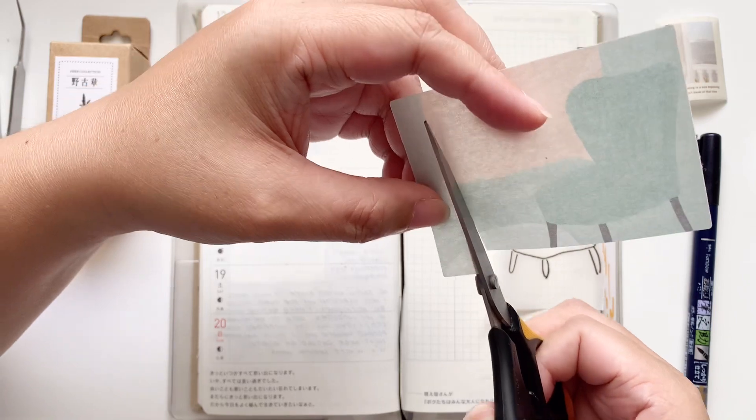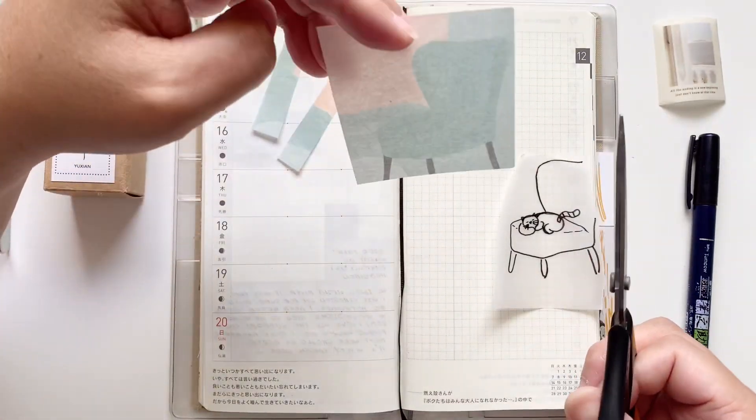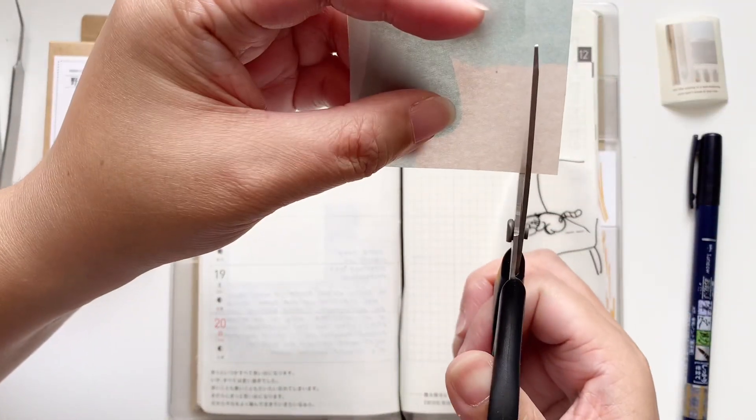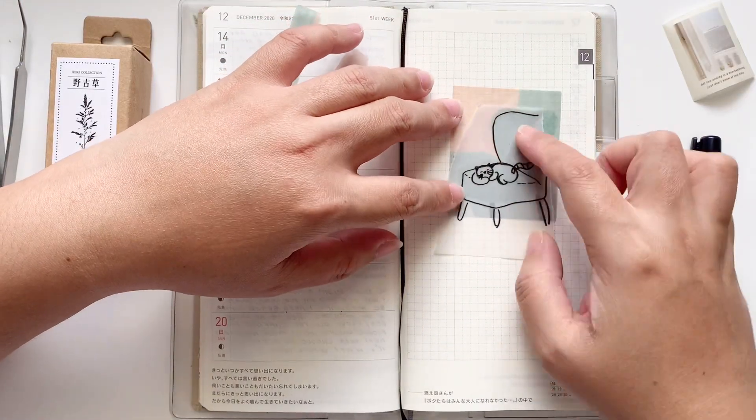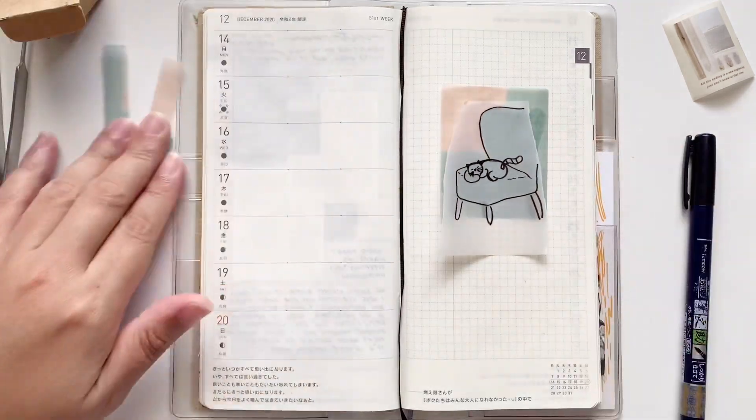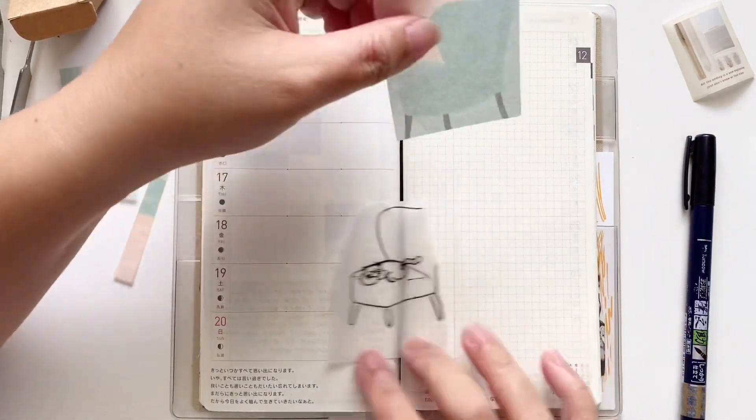I'm cutting up the edge of that really big washi sticker because I'm going to be using those for the left side of the page while the remaining sticker will be on the right side of the page.